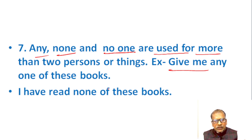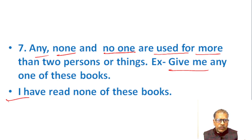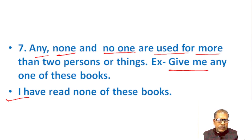Next usage rule: 'None of the books' — none is used when there are more than two persons or things. Here the correct form is 'I have read none of the books.' None is used for more than two persons or things.